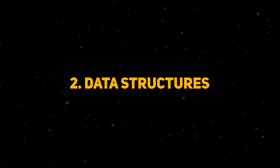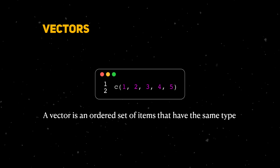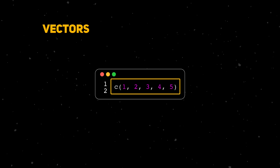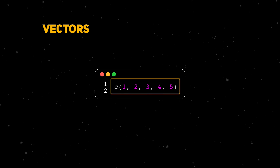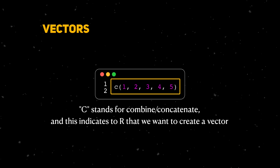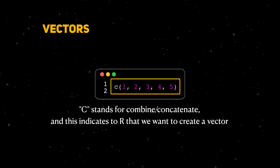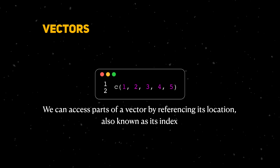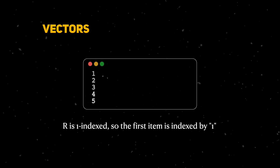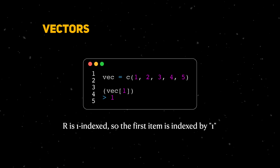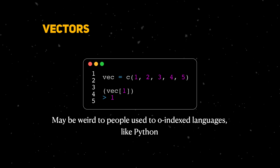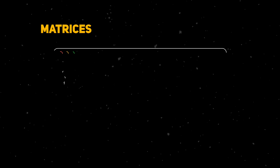You need to know about data structures so that we can store data in them. First is the vector — a vector is just an ordered set of items that have the same type. We can create a vector by placing data inside rounded parentheses preceded by a 'c', which stands for combine or concatenate. We can access parts of a vector through indices. R is a one-indexed language, which means that the first element in any data structure is indexed by the number one — different from zero-based languages like Python.